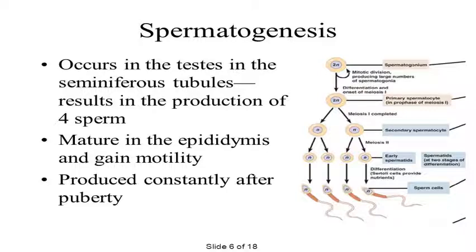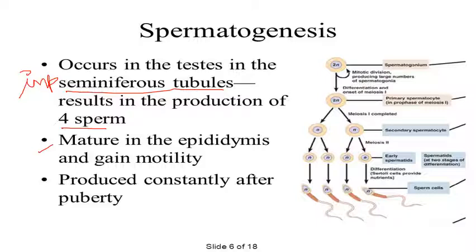Moving towards the formation of sperms: the formation of sperm is known as spermatogenesis, and it takes place in the seminiferous tubules — this is very important to remember. This results in the formation of four sperms. Maturation of the sperms takes place in the epididymis, where sperm cells are stored and motility is provided to them.